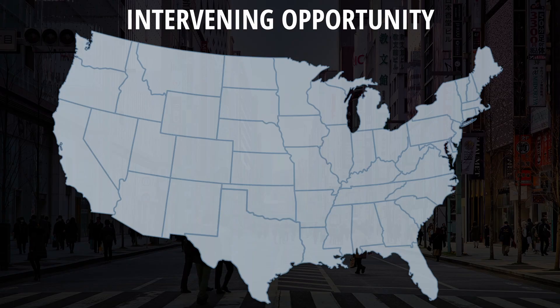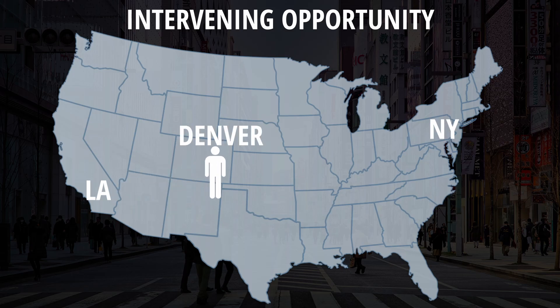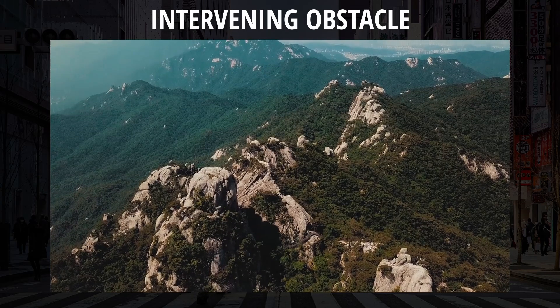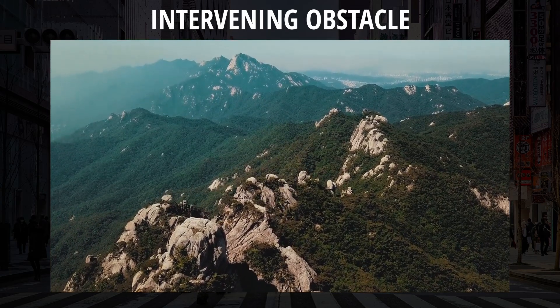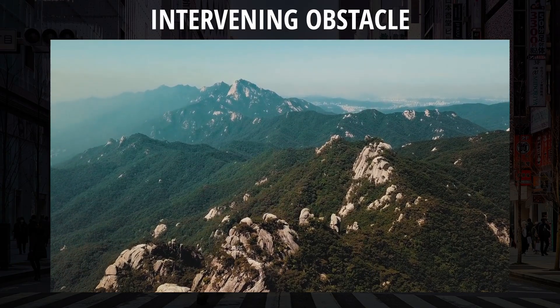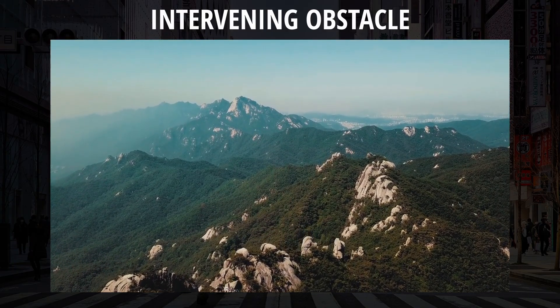Among the different types of migration, there's intervening opportunities — where an opportunity arises that diminishes the attractiveness of a location further away. Say Jimmy was planning on moving from L.A. to New York to search for a better-paying job. Along the way, he stops in Denver, Colorado, but befriends a billionaire who wants to hire him to run his company. This would be an example of an intervening opportunity, as Jimmy never made it to New York. Then there are intervening obstacles — features that would hinder or stop migration. A mountain range preventing travel could be an intervening obstacle, and a language barrier could also be one, as learning a new language is difficult and might prevent people from moving.